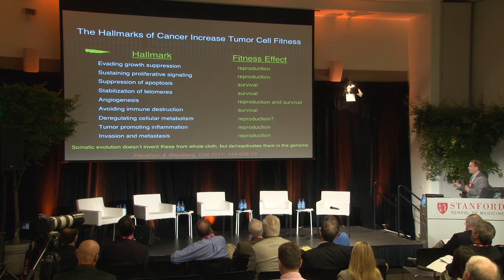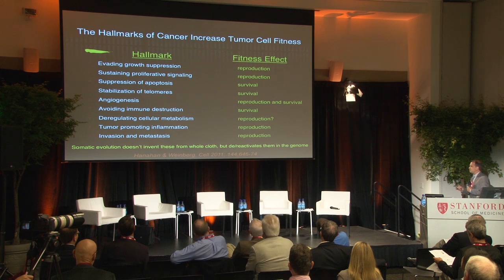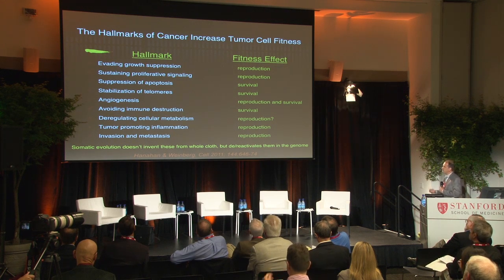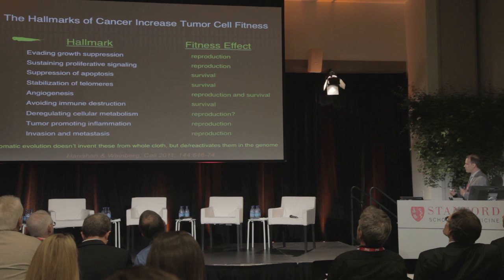If you look at the hallmarks of cancer — the common characteristics or phenotypes across all different cancers — each of these hallmarks gives an advantage to the mutant that acquires that phenotype over competitor cells that don't have it. Cancers typically ignore signals that would normally suppress cell growth, giving them a reproductive advantage. They generate their own signals to proliferate, adding another reproductive advantage. They suppress apoptosis, stabilize their telomeres allowing them to divide indefinitely, and generate new blood vessels. All these behaviors are selectively advantageous for the cell — obviously not for the host — but this is an example of multi-level selection. And these behaviors aren't evolved from whole cloth; they're normal behaviors in cells that are active during embryogenesis and wound healing. All cancer has to do is reactivate them.